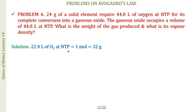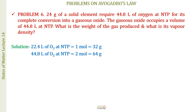From Avogadro's law, at NTP, 1 mole of any gas occupies 22.4 liters. So 22.4 liters of oxygen = 1 mole = 32 g. Since 44.8 liters of oxygen is required, that equals 2 moles = 64 g of oxygen.